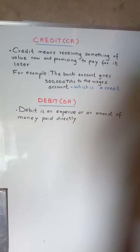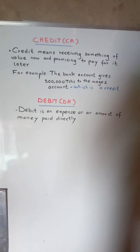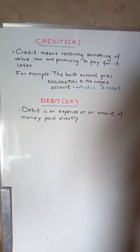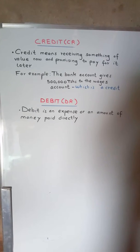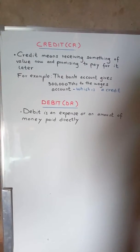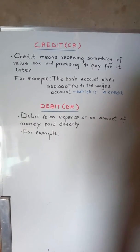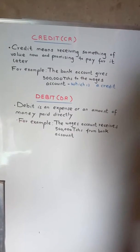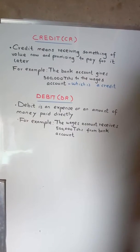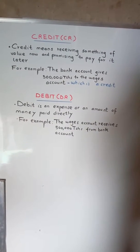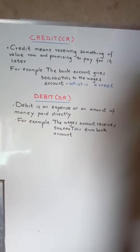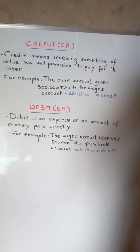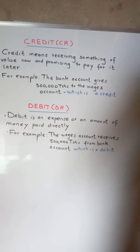Debit is an expense or an amount of money paid directly. For example, the wages account receives 500,000 shillings from the bank account, which is a debit.